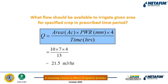We also calculate the required discharge to irrigate the given area. With 10 acres area, 7 mm/day peak water requirement, and 13 hours available time, the required discharge is approximately 21.5 m³/hr. The available discharge of 22.5 m³/hr is more than the required 21.5 m³/hr, so the given area can be irrigated comfortably within the given time.